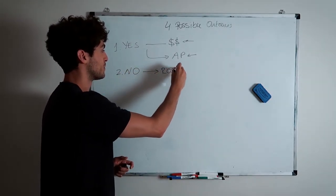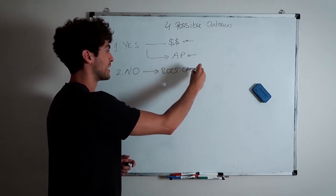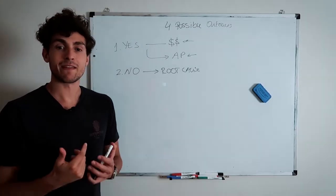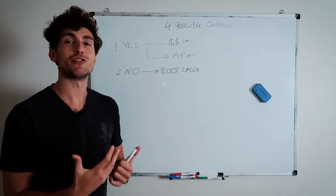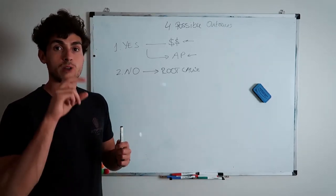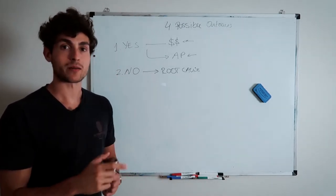So you want to make sure that you get to the root cause of the no. Root cause of the no. Do a bit of digging, right? The no is usually caused by something. It's not just that they're closed off. If they were closed off to the opportunity, they would have never jumped on a call in the first place. So that's another thing that you need to understand. So that is the second outcome that we want to keep in mind.